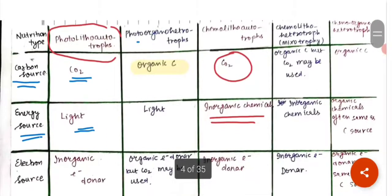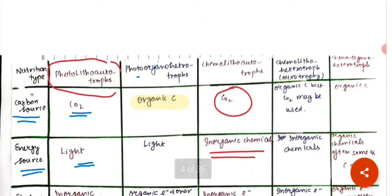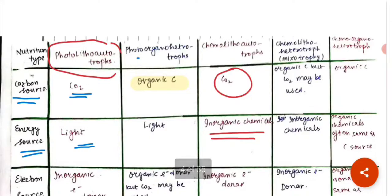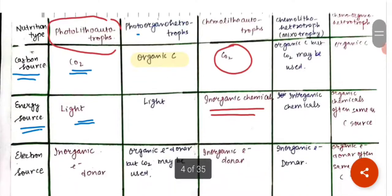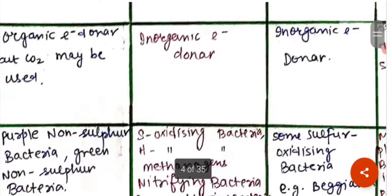The next category is chemolithoheterotrophs, also known as mixotrophs. For their carbon source they use organic carbon, though CO₂ may also be used. Their energy source is inorganic chemicals, and their electron source is an inorganic electron donor. Examples include some sulfur-oxidizing bacteria.